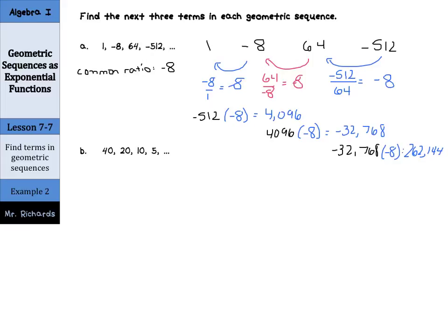To write our answer out, we have 4,096, and we can use a semicolon to separate these, -32,768, another semicolon, 262,144. So we started off by finding the common ratio, and then we multiplied to get our next three terms.